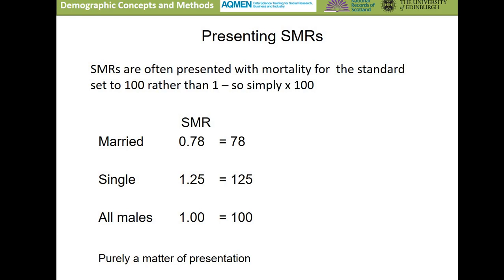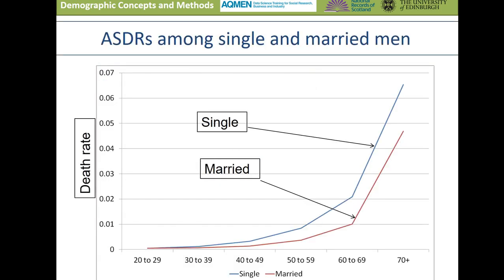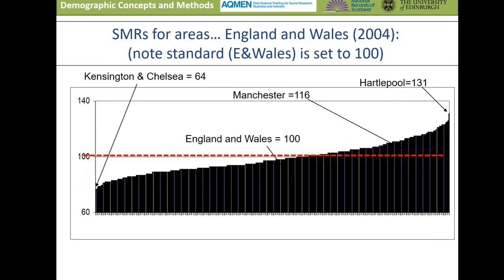Sometimes SMRs are presented with an index of 100, so they're simply multiplied by 100. The interpretation is exactly the same — it's purely a presentational issue. So we can see that the crude death rate results were misleading: single males actually have higher levels of mortality, as we can see in the age-specific death rates, which are higher for single compared to married males. Here's some data from 2004 showing standardized mortality ratios across areas in the UK, ranging from an SMR of 64 in Kensington and Chelsea to 131 in Hartlepool. When producing projections for areas across the UK, it's clearly very important to capture this variability in mortality across places.